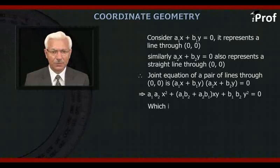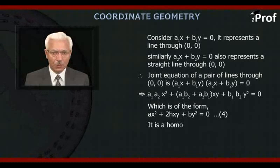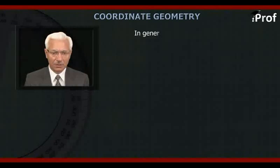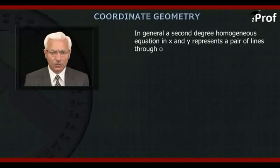This is of the form Ax² + 2Hxy + By² = 0. It is a homogeneous equation of second degree in x and y. In general, a second degree homogeneous equation in x and y represents a pair of lines through origin.